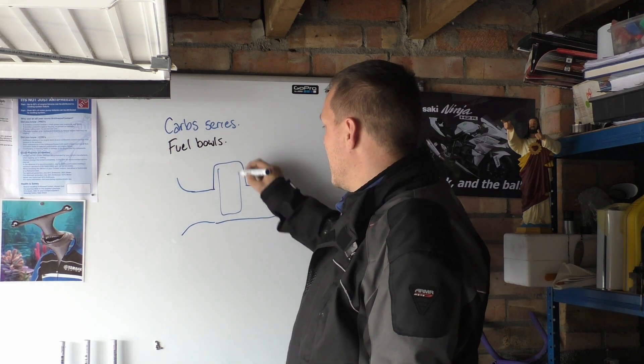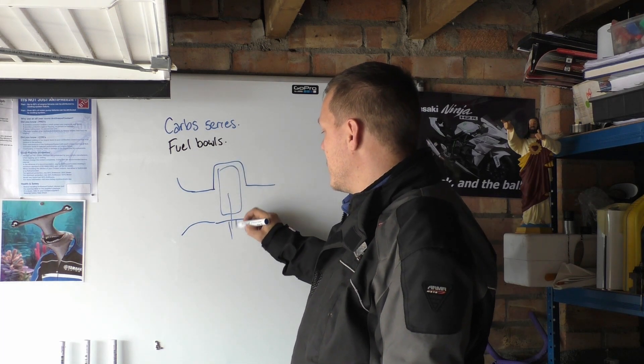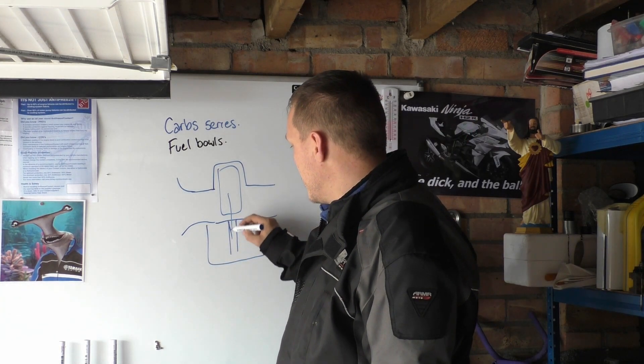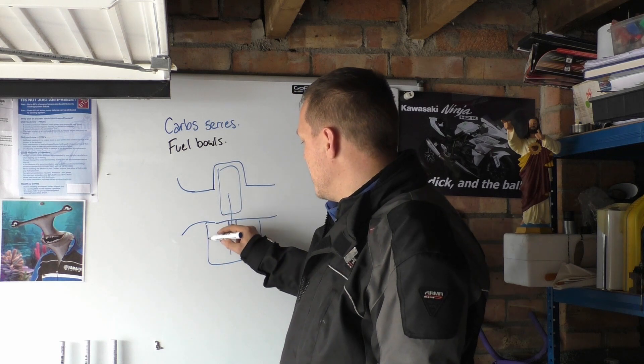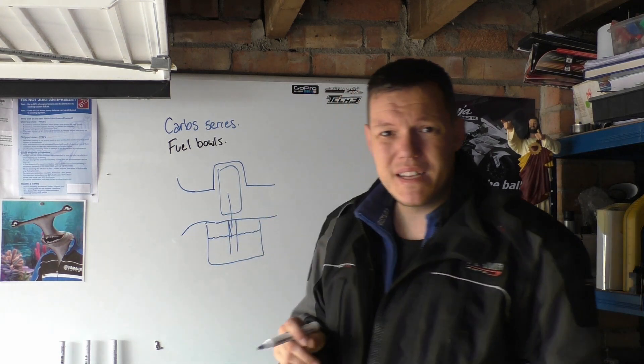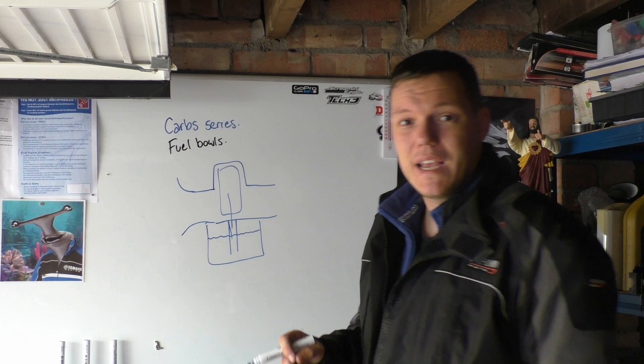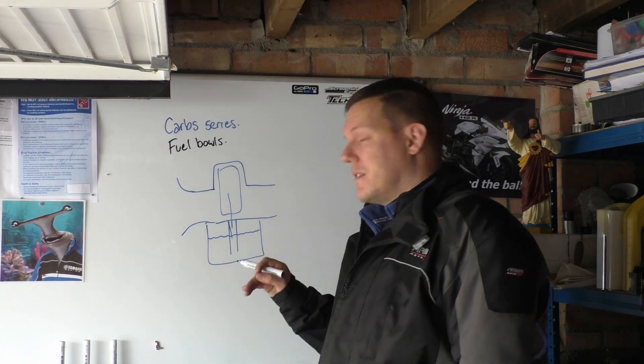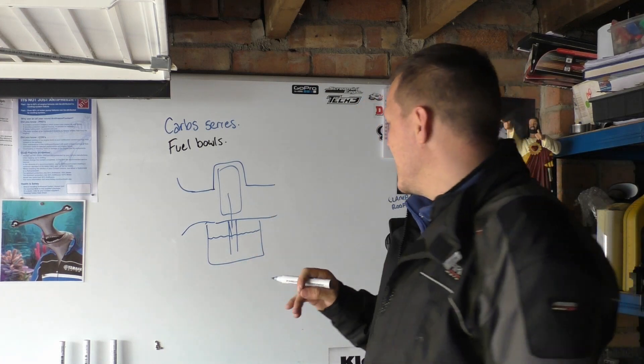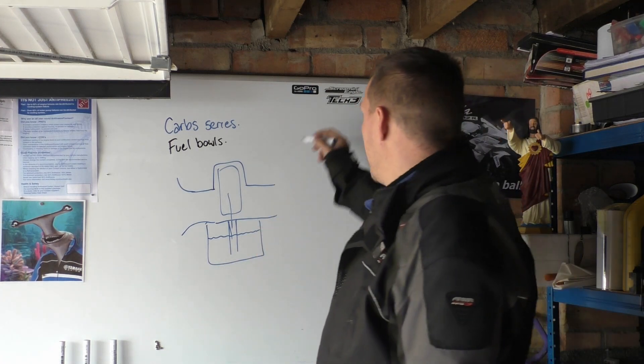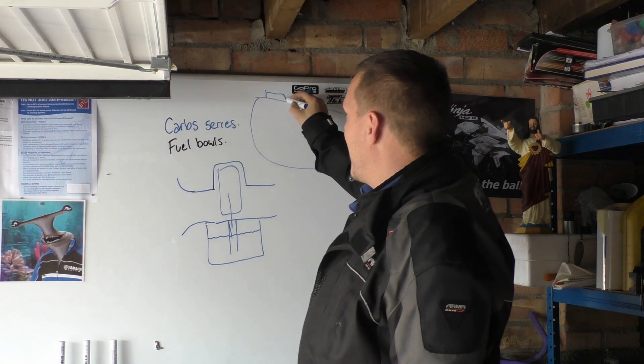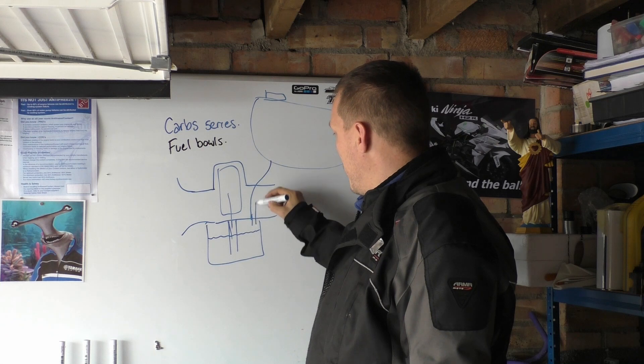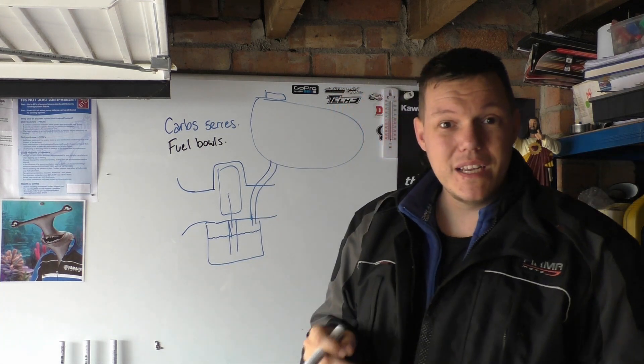So what we do is we have our carb like so with our slider and all this, our needle and our jet. And then what we do is we stick a tank, our jet going down like this, and we stick a tank. And we maintain that level. You see that? That's the thing, we're not even dropping it. That's the important thing. We need to maintain this.